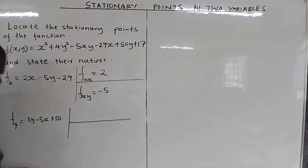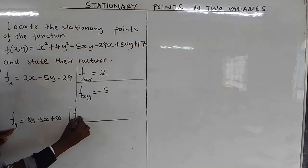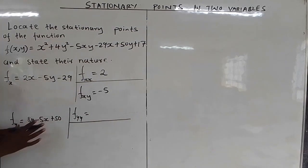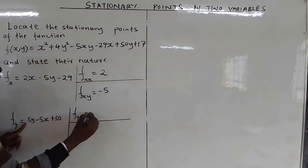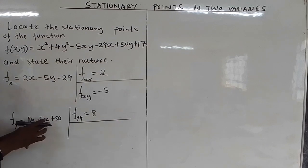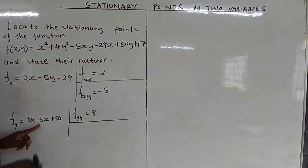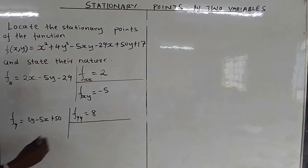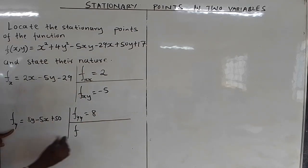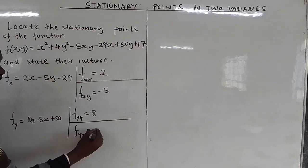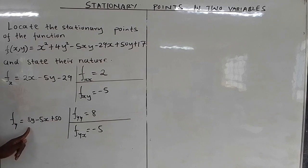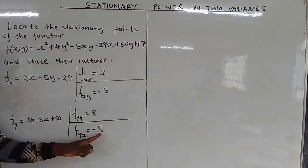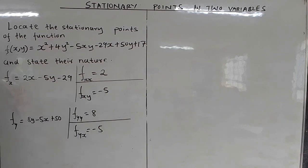Now differentiating ∂f/∂y again with respect to y: differentiating 8y gives 8, the -5x term has no y so it is a constant giving 0. So ∂²f/∂y² = 8. Then for the mixed partial — first with respect to y, then with respect to x — 8y is a constant giving 0, and differentiating -5x with respect to x gives -5. So ∂²f/∂y∂x = -5.